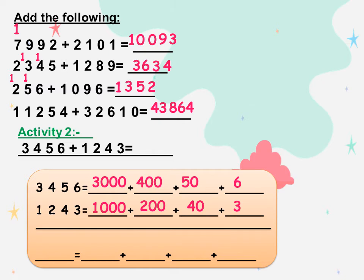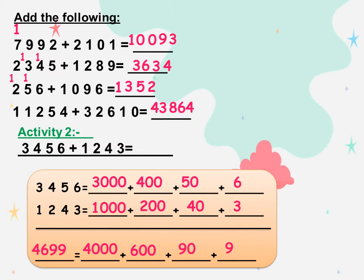Now we want to get the results for these values. 3,000 plus 1,000 equals 4,000. 400 plus 200 equals 600. 50 plus 40 equals 90. And 6 plus 3 equals 9. So the result is 4,699.